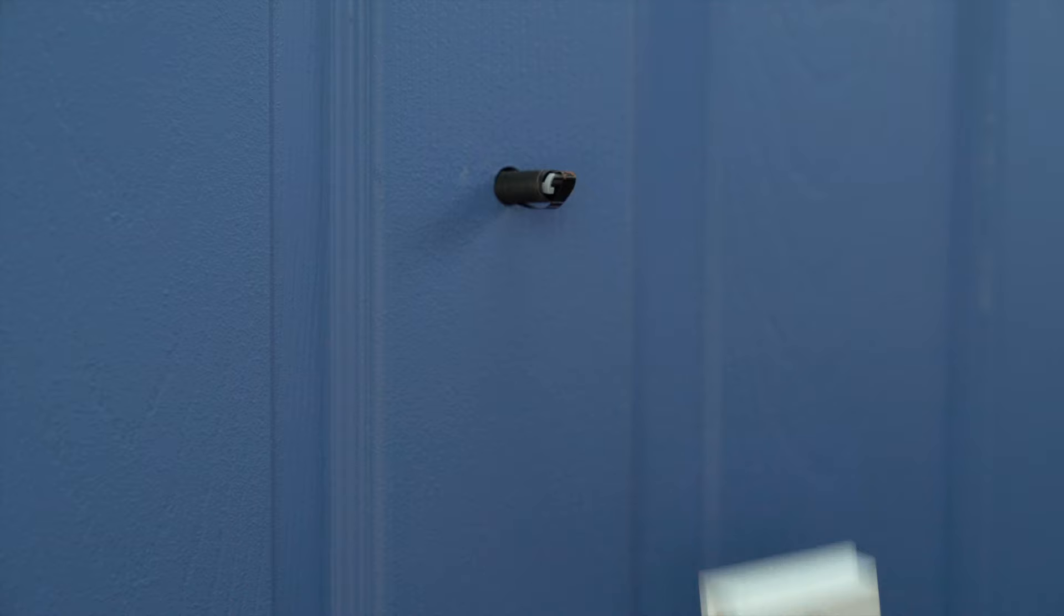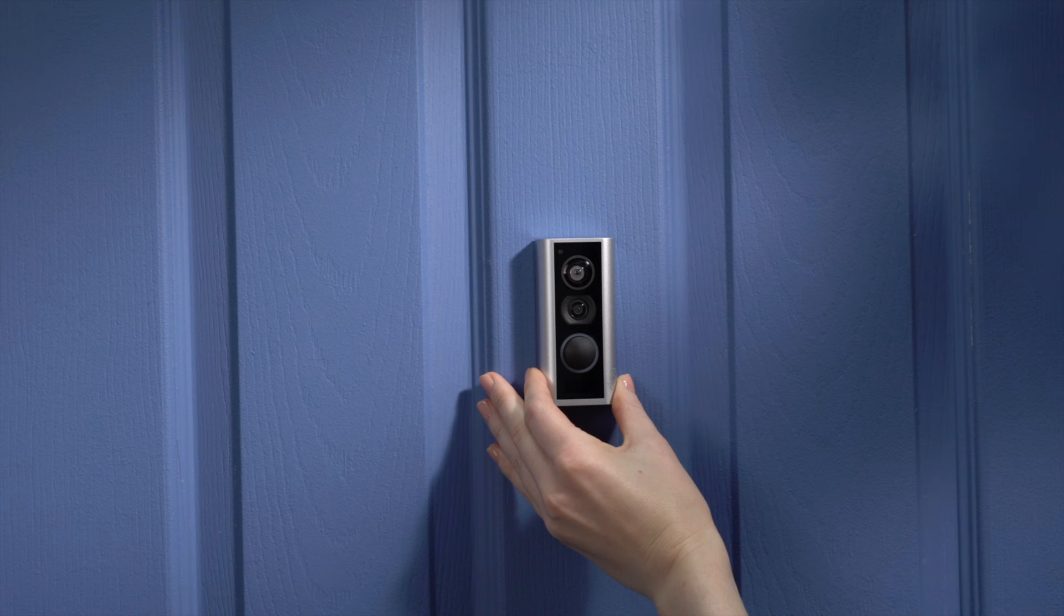Next, carefully guide the indoor assembly onto the tube until it's flush with your door. Make sure you don't accidentally push the outdoor assembly out of the door.